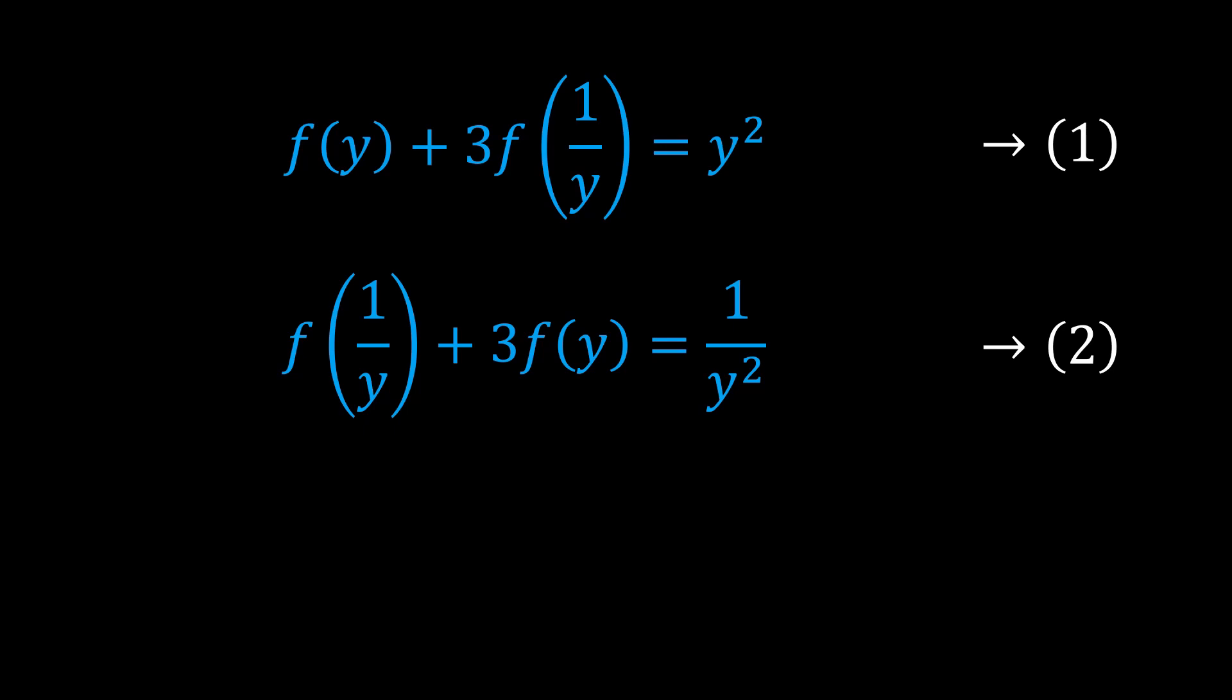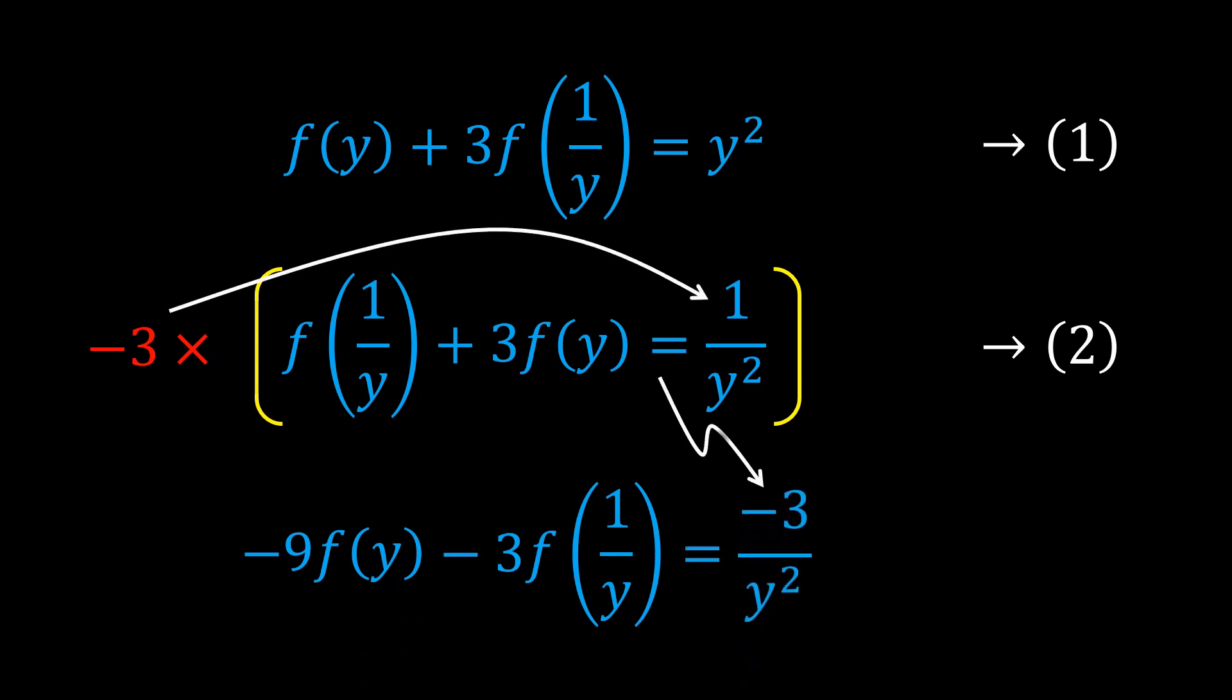Multiply the second equation by -3. The result is -3f(1/y) and -9f(y) on the left-hand side, and -3/y² on the right-hand side.